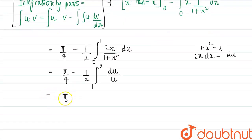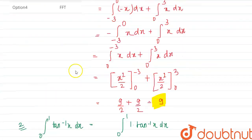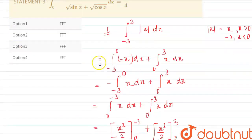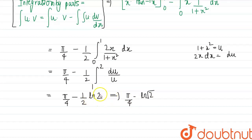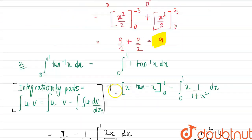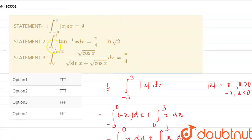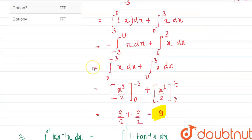So the result is π/4 − (1/2) ln 2, which can be written as π/4 − ln 2^(1/2), that is π/4 − ln√2. This matches the given statement, so statement two is also correct.